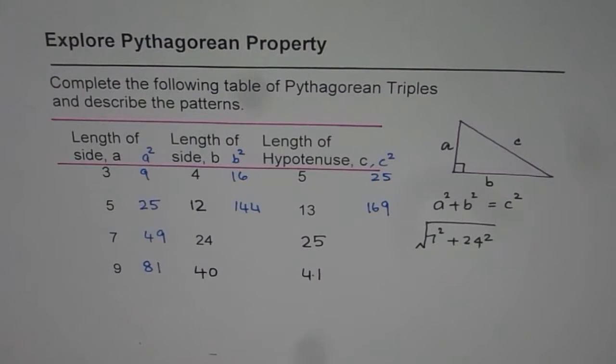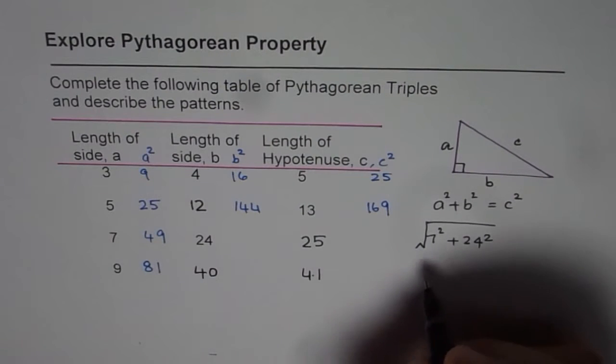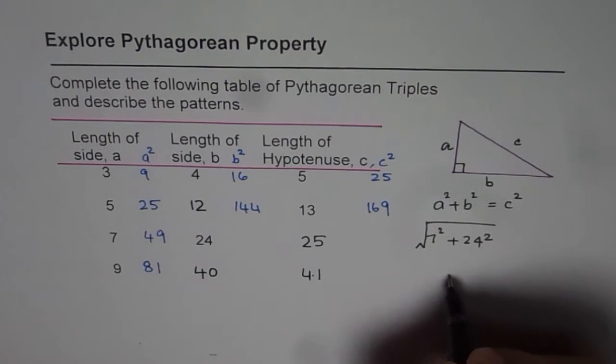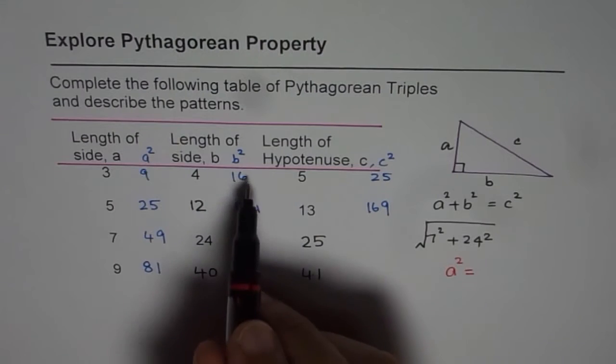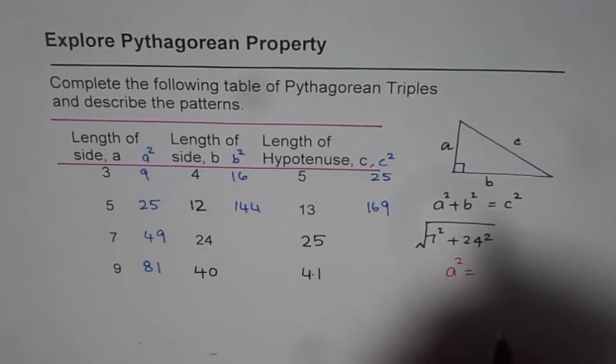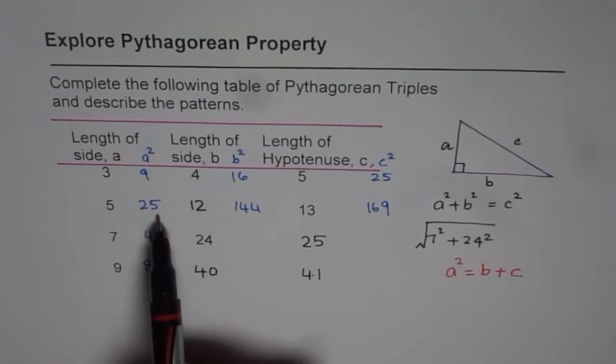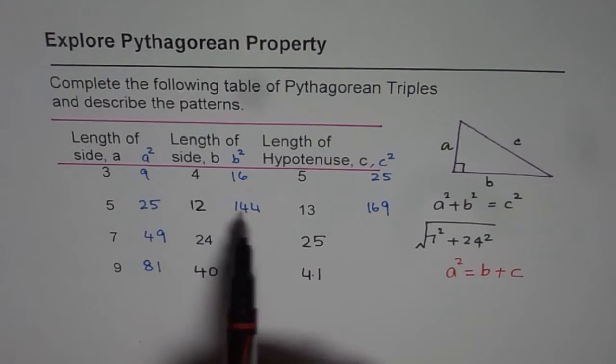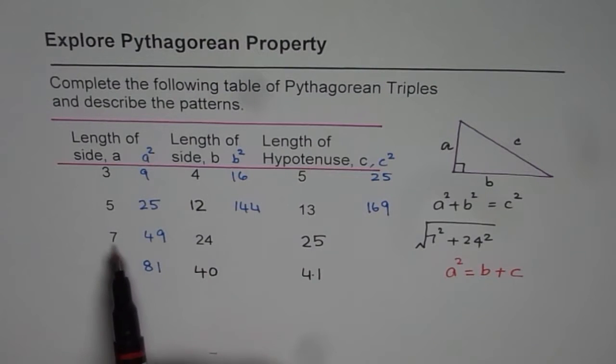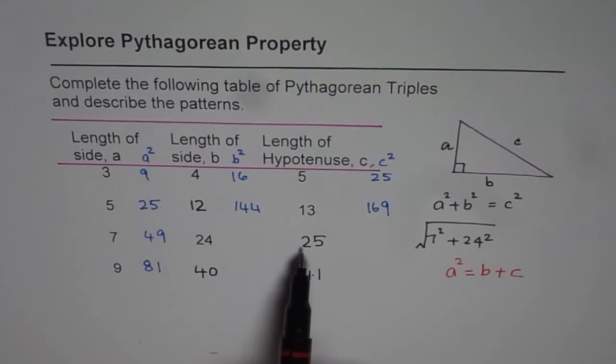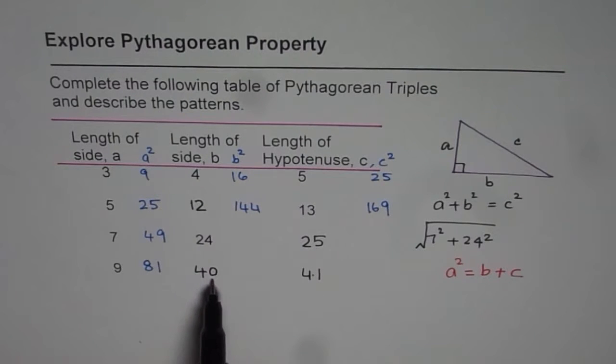There you see a pattern. We find that a square is actually equal to b plus c. 4 plus 5 is 9. a square equals to b plus c. So this is one pattern which we notice. 25 is indeed equal to 12 plus 13. 49 is equal to 24 plus 25. And I guessed these values. 81 is equal to 40 plus 41. So this is one of the very interesting patterns which I noticed.